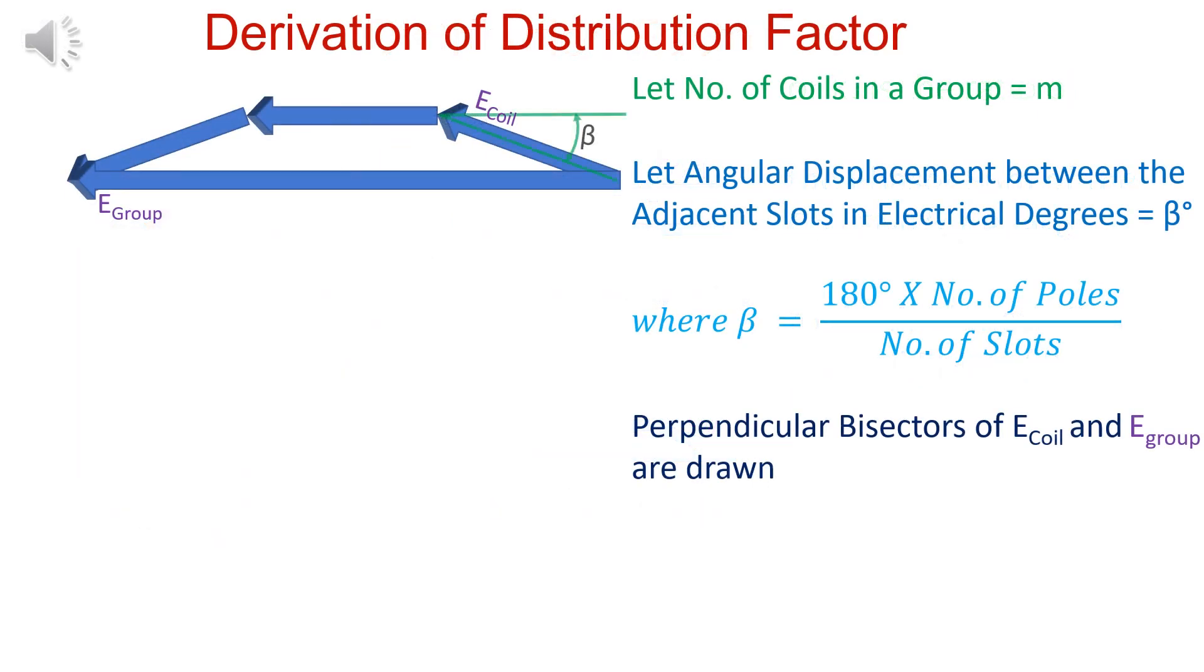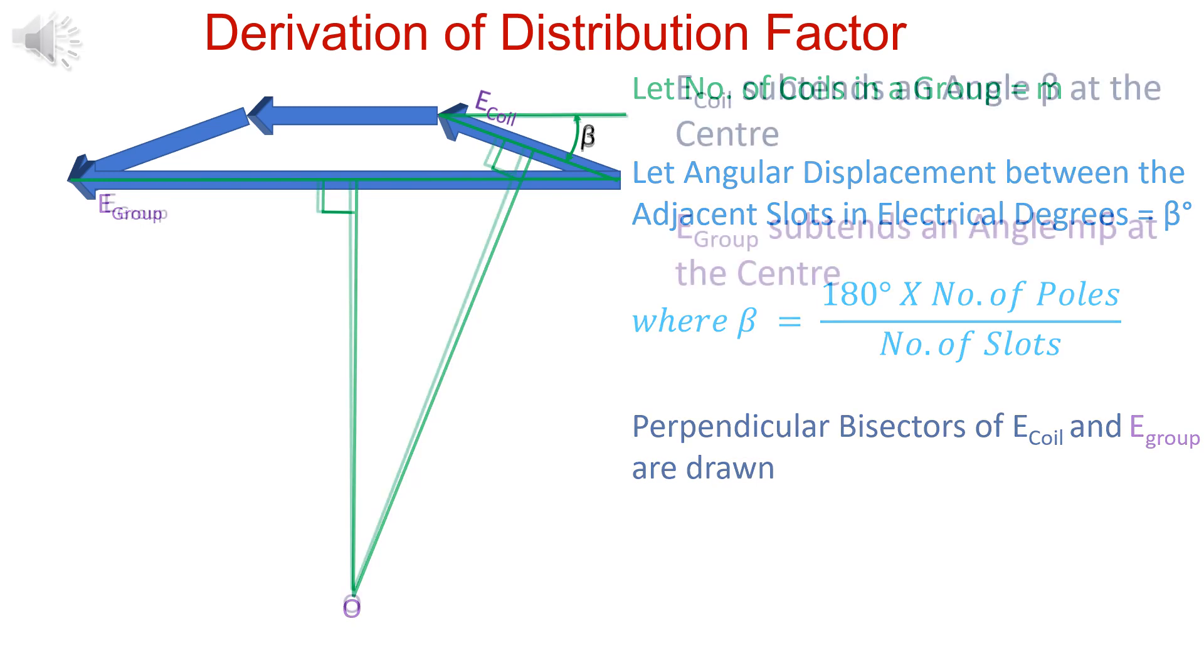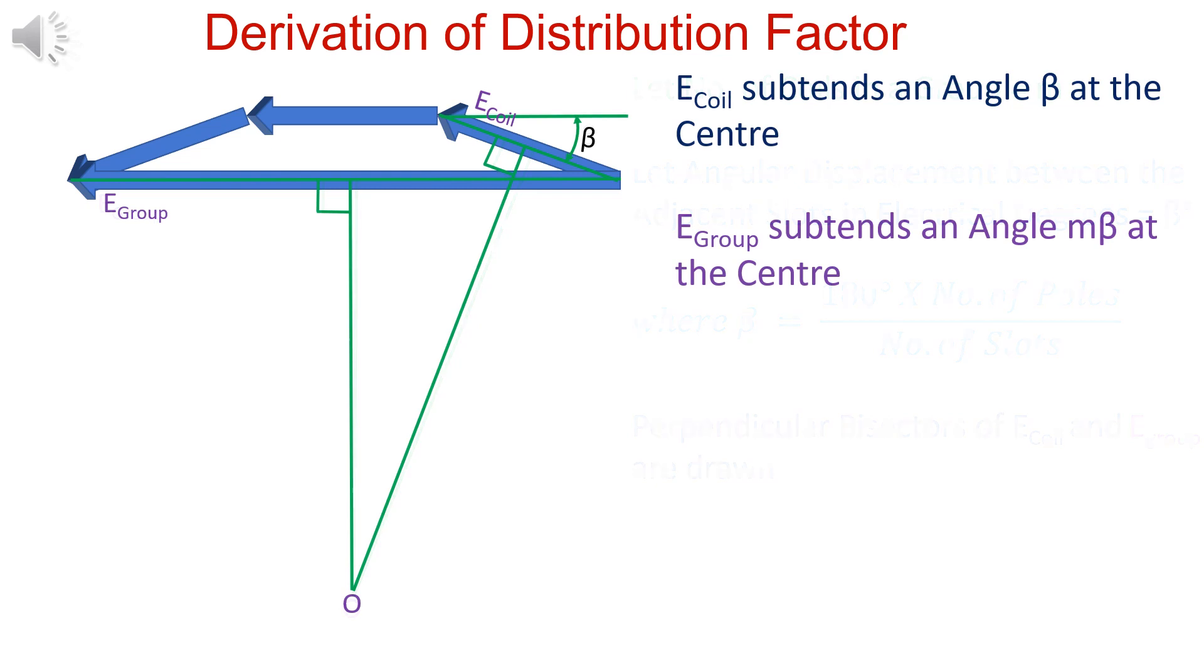Let us derive distribution factor KD. Let M is the number of coils in a group. Beta is angular displacement between slots in electrical degrees. Perpendicular bisector of coil EMF and group EMF. Coil EMF subtends angle beta and group EMF subtends angle M beta at the center.